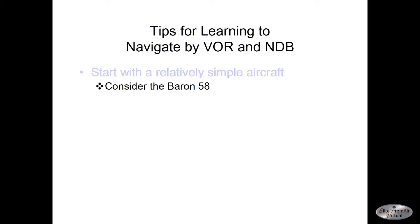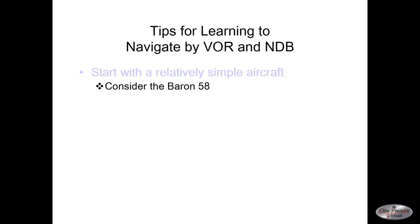The Baron 58 has a nice instrument layout including an HSI-type VOR, which may help you transition to more complex aircraft. But whatever you do, whichever one you pick, be familiar with the instruments. Understand how they work, how to set them, and very importantly, when they're on or off or not receiving a signal. The next video in this series actually covers some of the aircraft and the different instruments you'll see.